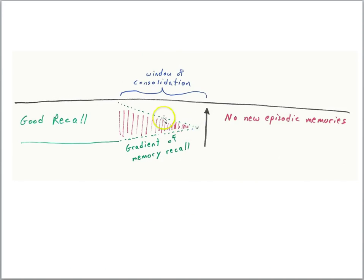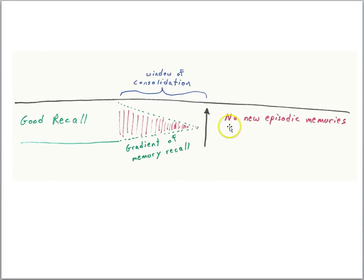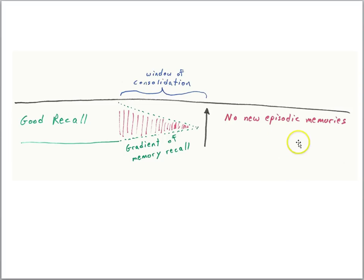We'll use this diagram to characterize HM's memory deficit. Here we have a timeline for HM's life, and the arrow indicates when he had surgery. After surgery, he was unable to make new episodic memories, and because episodic memories provide the content for semantic memory, he could not learn new facts about the world — he couldn't add new things to his semantic memory either.